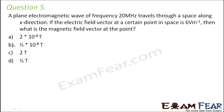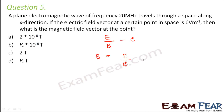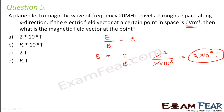Question number 5: A plane electromagnetic wave of frequency 20 megahertz travels through space along the x direction. If the electric field vector at a certain point is 6 volt per meter, what is the magnetic field vector at that point? At any point in an electromagnetic wave, the ratio of electric field to magnetic field equals the speed of the electromagnetic wave. So the magnetic field B = E / c = 6 / (3 × 10⁸) = 2 × 10⁻⁸ Tesla. That is option A.